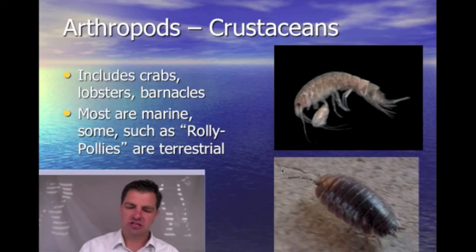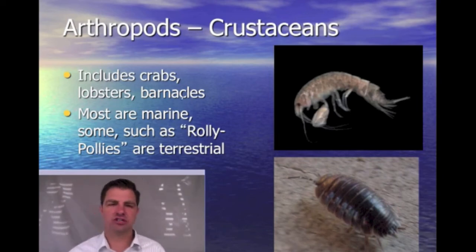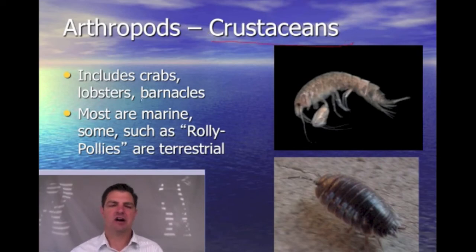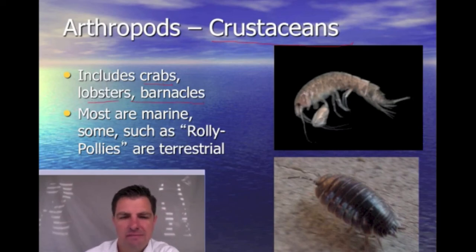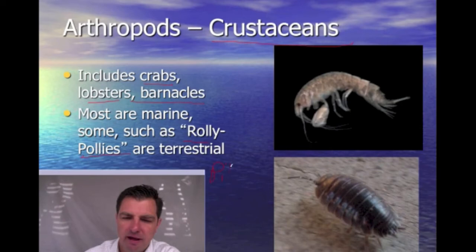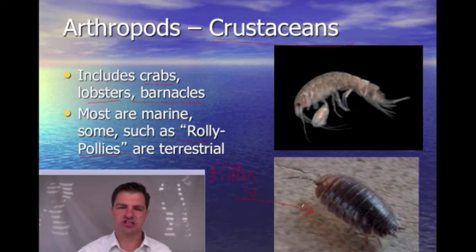Also within the Arthropoda — not so big on land, but in the ocean — we have the group called the crustaceans. There are a whole bunch of crustaceans in the ocean: crabs, lobsters, and barnacles. Most of them live in the ocean, but what you call the roly-poly, also called the pill bug, is also an example of a crustacean found on land.